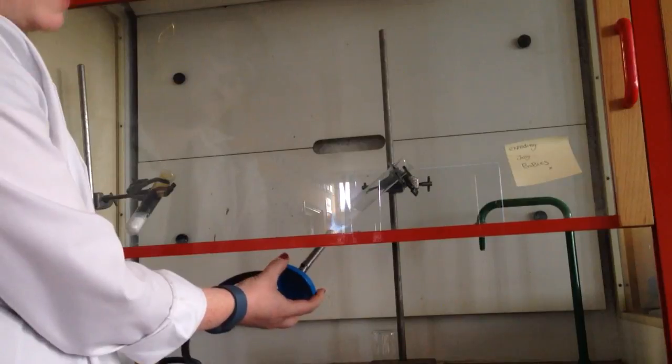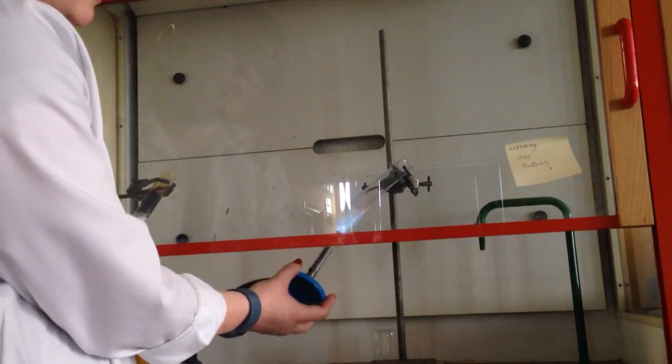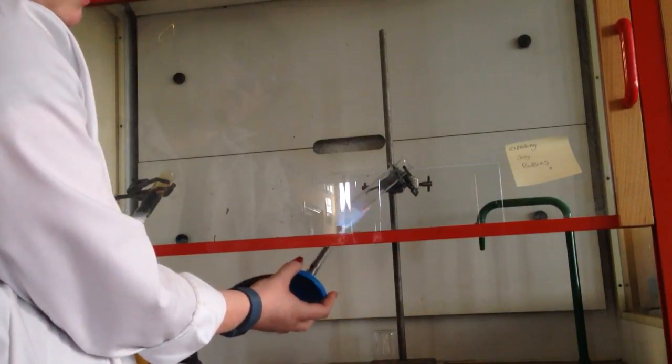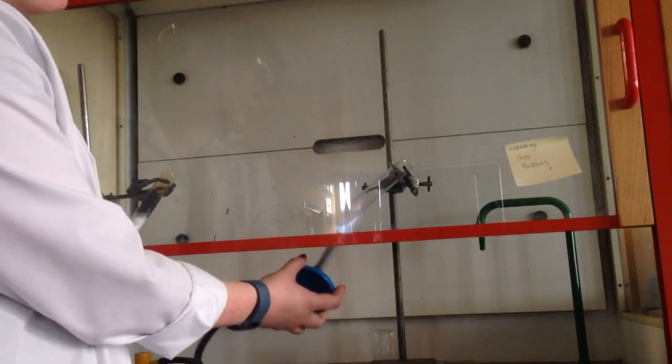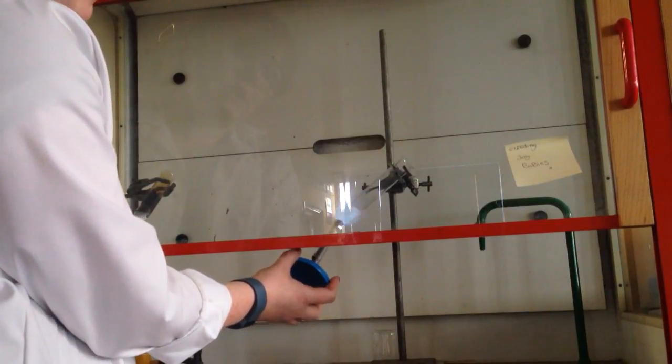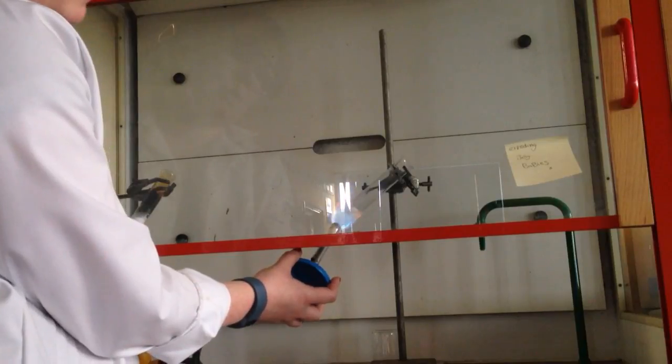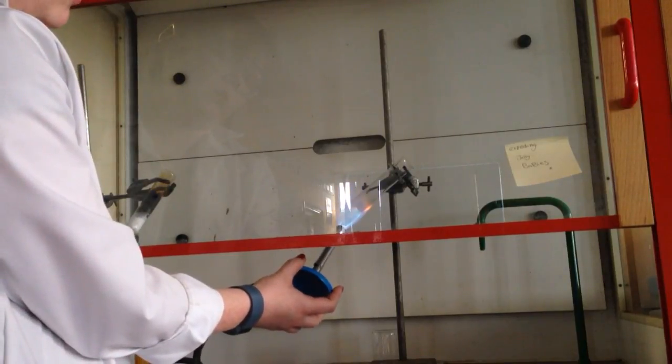So in the boiling tube here I have potassium chlorate which I'm heating. You need to get this liquid. I've been heating it for quite a long time but that was a bit boring so I didn't start the video then. You need to get this properly liquid for the experiment to work well.